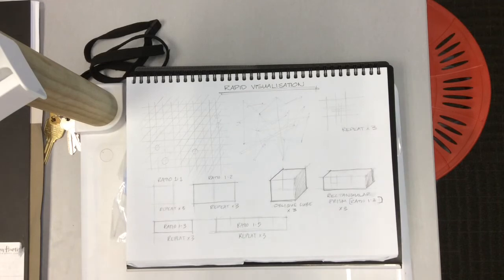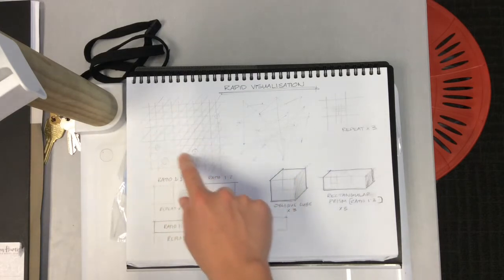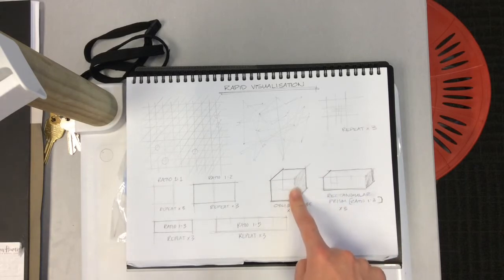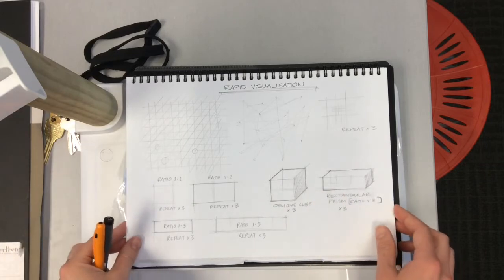Today we're going to look at rapid visualization, getting your eyes and hands working really well together so you can quickly draw forms that you're thinking of within your head. We'll start by drawing parallel lines to construct 3D forms, then work on ratios and proportions before drawing 3D forms. Let's get started.